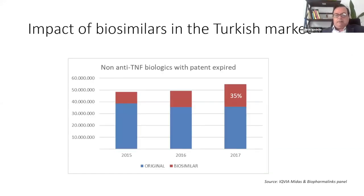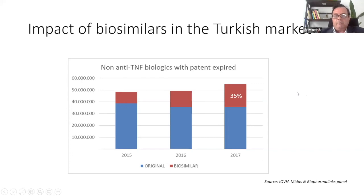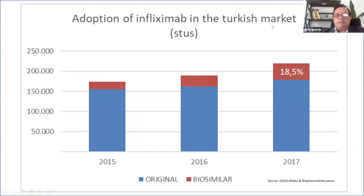We are evaluating the situation in the Turkish market to understand the impact of biosimilars on uptake. After three years, 35% of the pool for the molecules discussed are now biosimilars — considering that some of them are very old, the fact that 65% of the market remains with originators is interesting. The originators are able to keep their share but at the cost of reducing prices by 25–30%. For infliximab, the only TNF inhibitor with biosimilars in that market, after three years biosimilars represent 18.5% of the market.